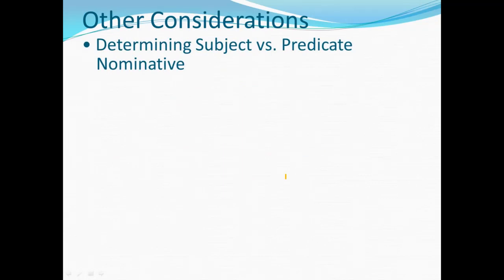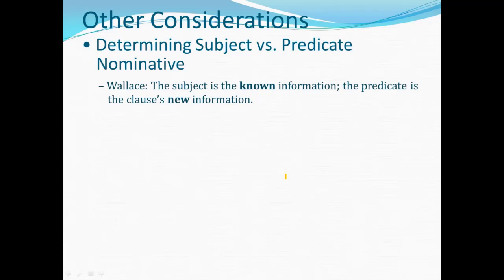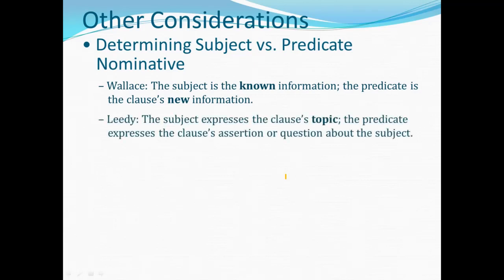Now, related to the predicate nominative comes the question: when there are two nominatives, which is the subject and which is the predicate nominative? Here's what Daniel Wallace says in Greek Grammar Beyond the Basics: the subject presents the known information — something already discussed in context. The predicate is the clause's new information about the subject, either as a question or an assertion. I summarize it this way: the subject expresses the clause's topic, and the predicate expresses the clause's assertion or question about the topic.